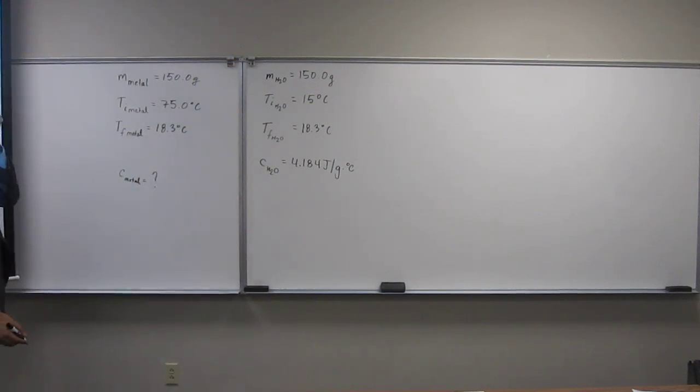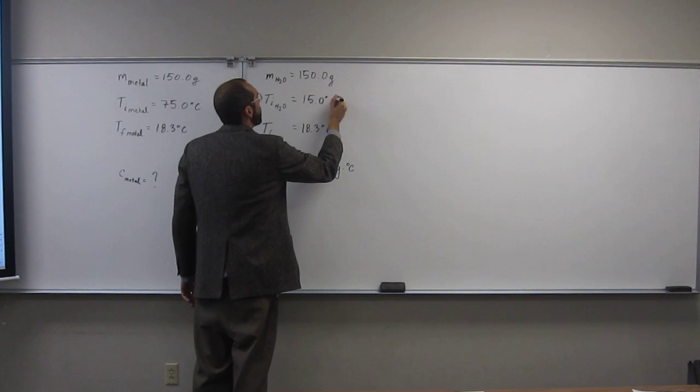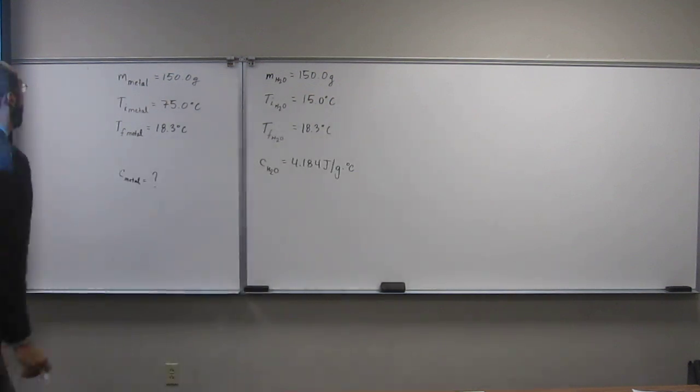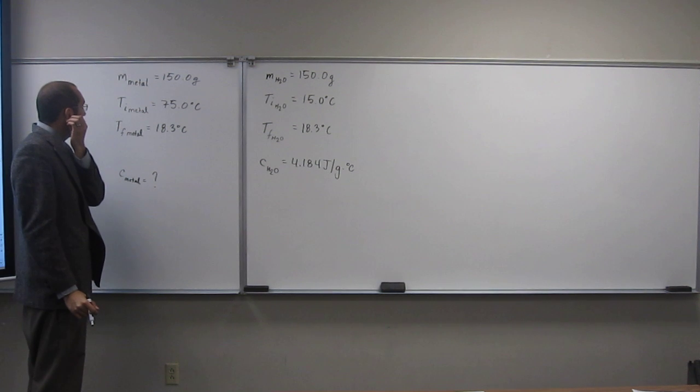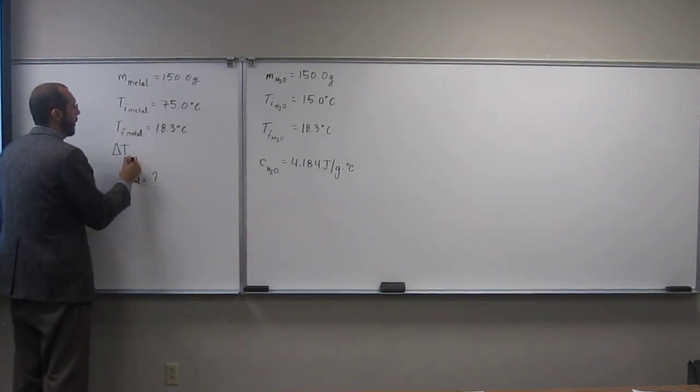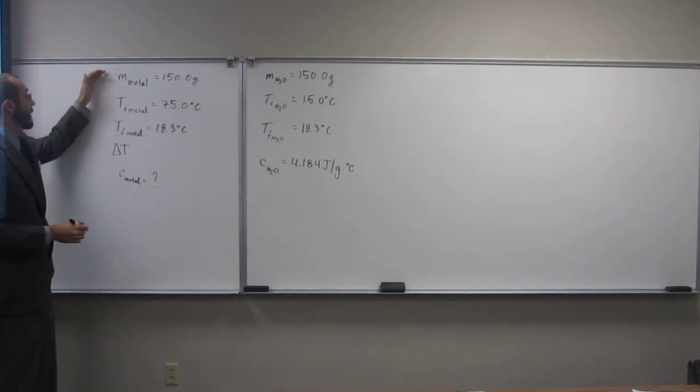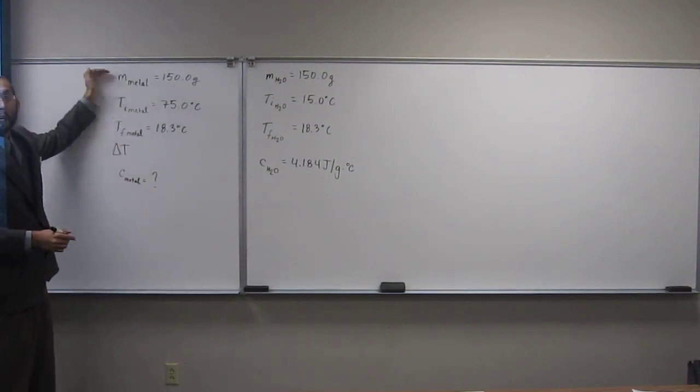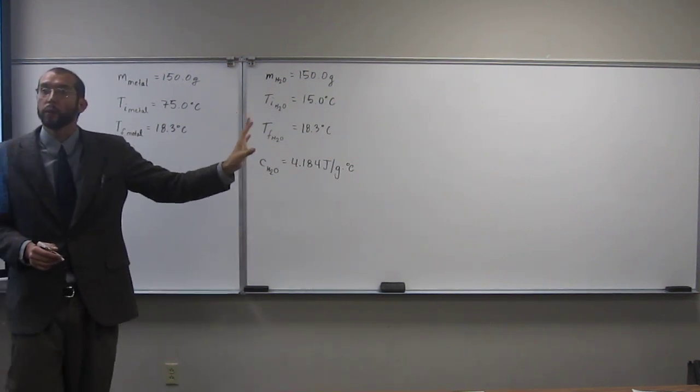Well, so we can do some other things. This should be 15.0. Sorry about that. I know it's not written up there. Anyways, so the thing that we want to know, or what we need to know, is the delta T for both of these. Because hopefully you guys see what we're doing here. We're doing M times C times delta T. Right? So the specific heat equation.